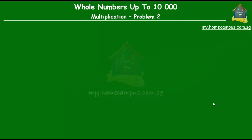Hello and welcome to my.homecampus.com.sg. In this lesson, we learn how to multiply with regrouping. The question is: find the product of 135 and 3. Now we know that product means multiplication, so we have to multiply 135 by 3.